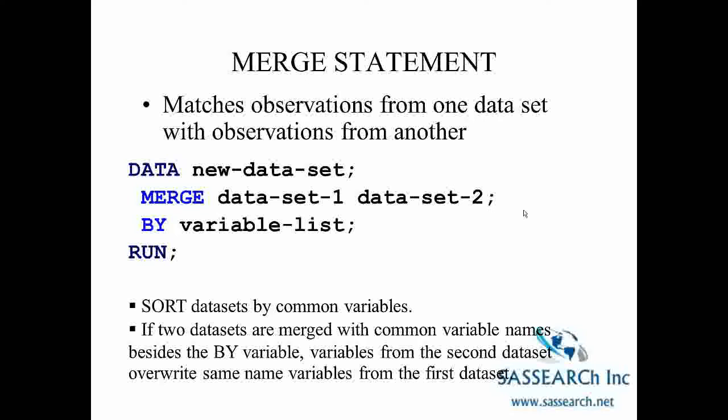For example, sort by patient ID. If two datasets being merged have common variable names besides the BY variable, variables from the second dataset will overwrite the same-named variables from the first dataset. So if both datasets have a variable called BMI and you're merging by patient ID, BMI from the second dataset will overwrite BMI from the first dataset. We'll look at examples of this in the SAS demonstration video.